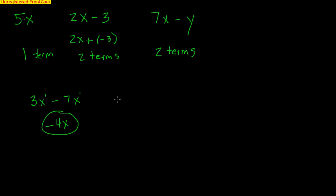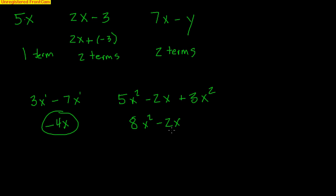We can do another example: 5x squared minus 2x plus 3x squared. There are three terms here. The first and last are like terms — they both have x squared. So 5 and 3 makes 8x squared, minus 2x. The 2x has the same variable x but not the same exponent. Be careful: if I added a y to the back of one term, there are no more like terms — you need the same variable or variables AND the same exponents. So 8x squared and 8x squared y cannot be combined.